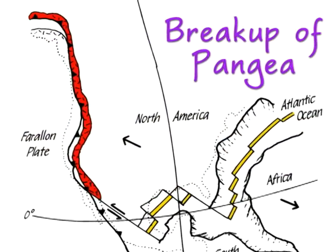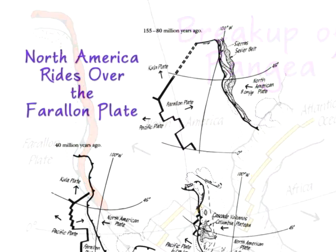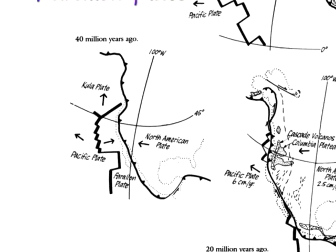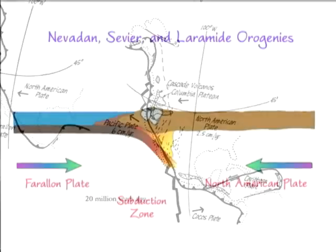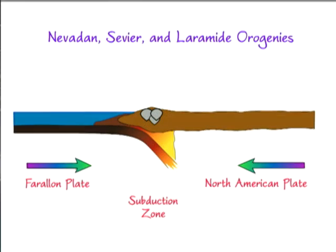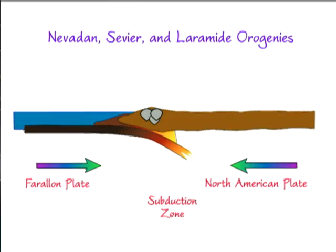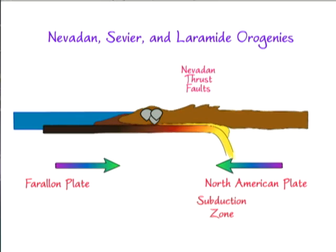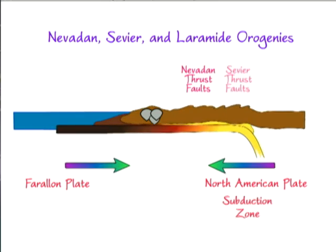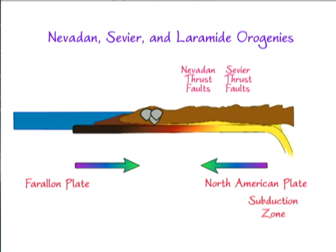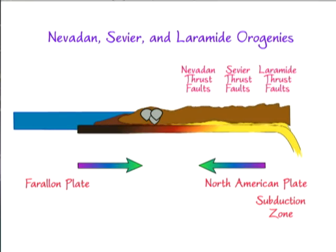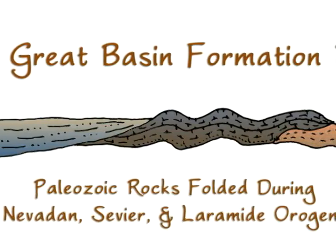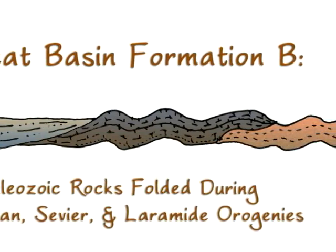About 150 million years ago, something happened that's still not completely understood — the North American Plate sped up. Instead of subducting, the remnants of the Farallon Plate were pushed under western North America, scraping and dragging the roots of the continent with it. This friction caused a wave of thrust faulting and mountain building that traveled west to east across Nevada, becoming the Nevadan Orogeny, then across western Utah, what's called the Sevier Orogeny.